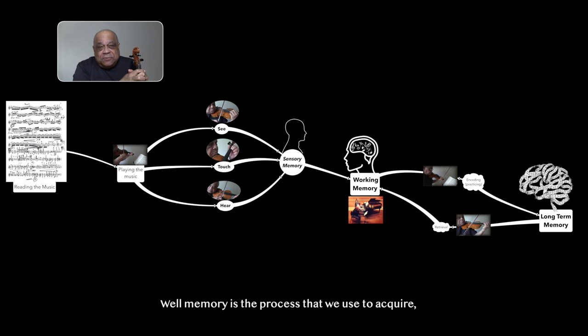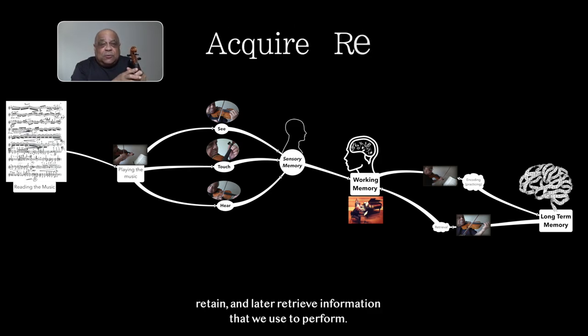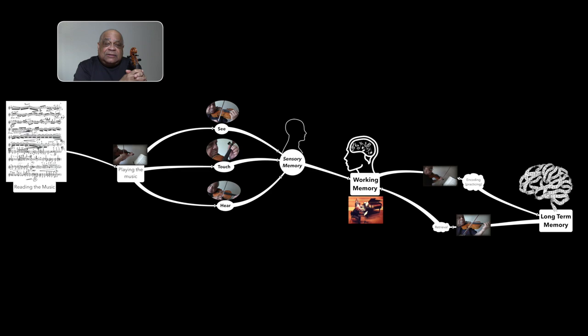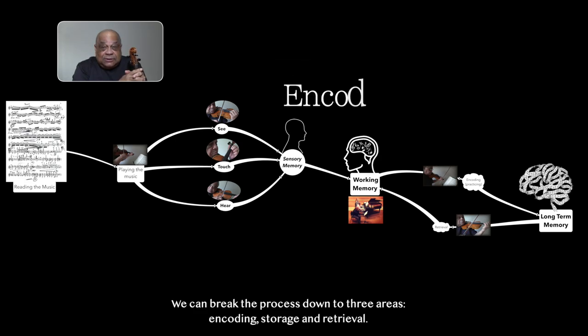Well, memory is the process that we use to acquire, retain, and later retrieve information that we use to perform. We can break the process down into three areas: encoding, storage, and retrieval.